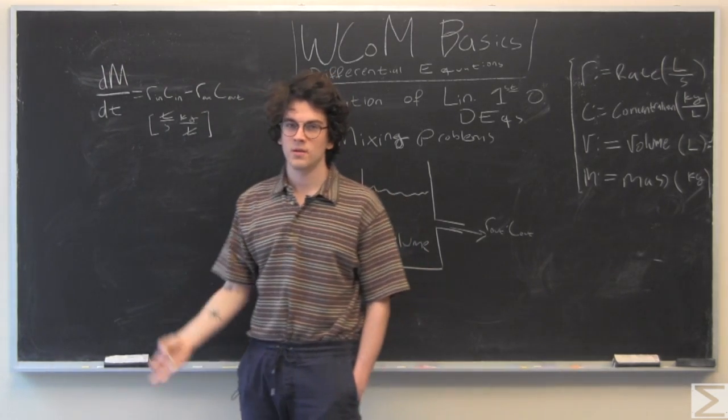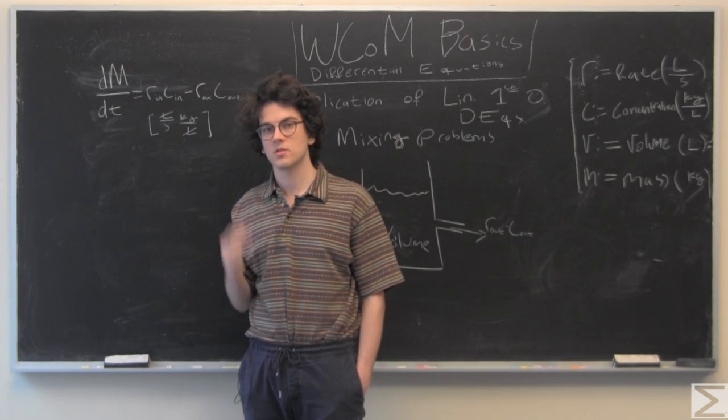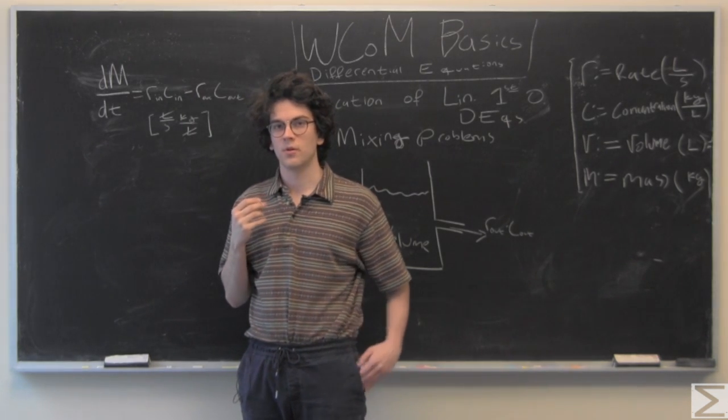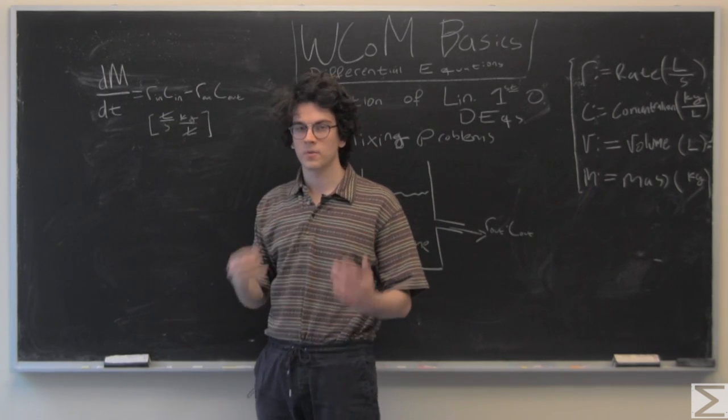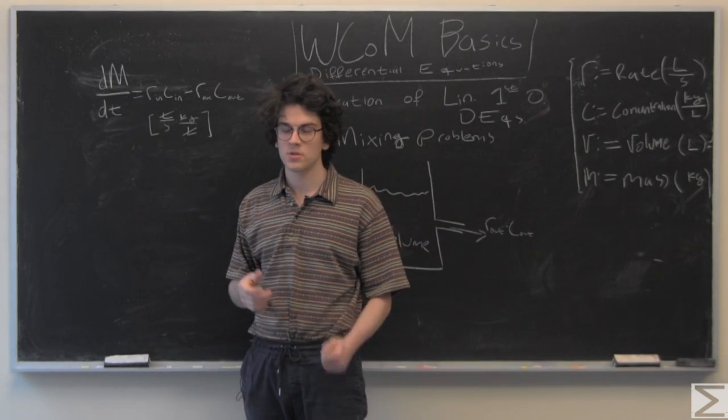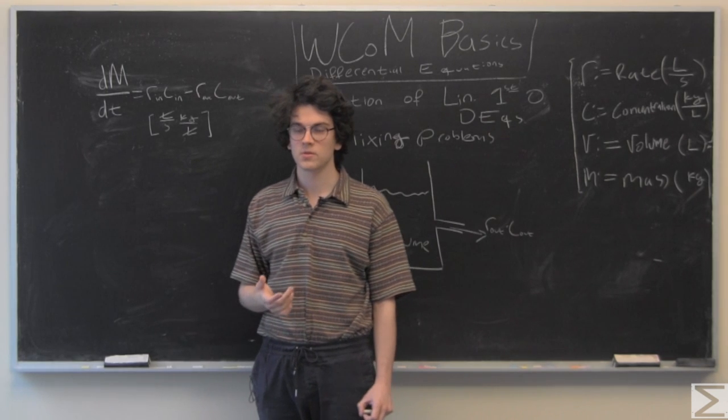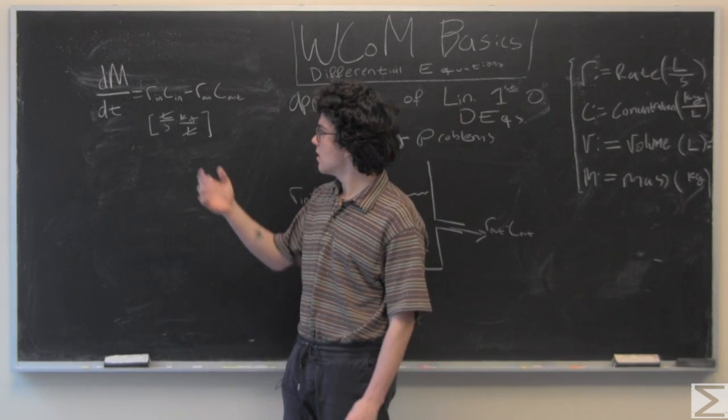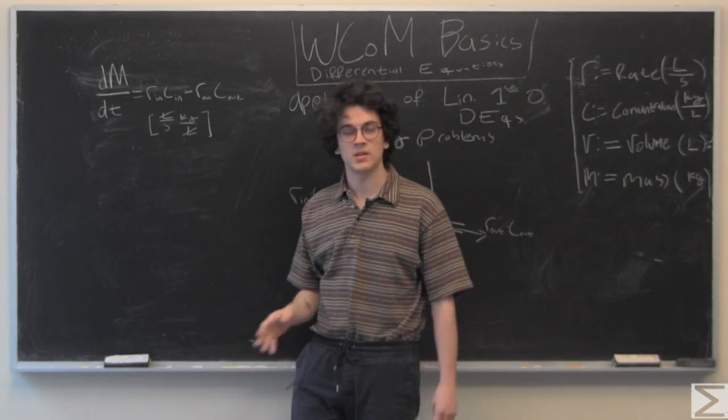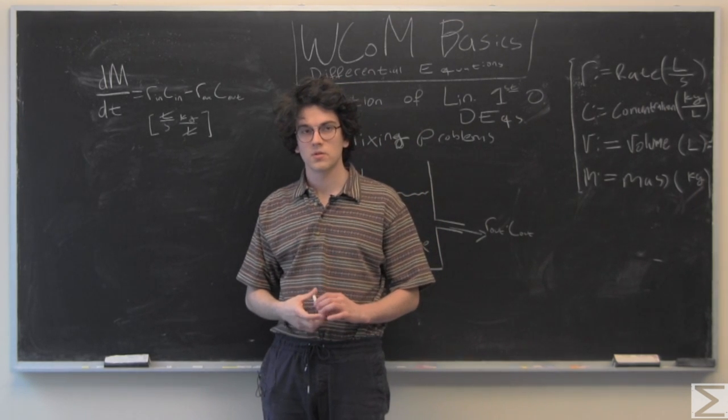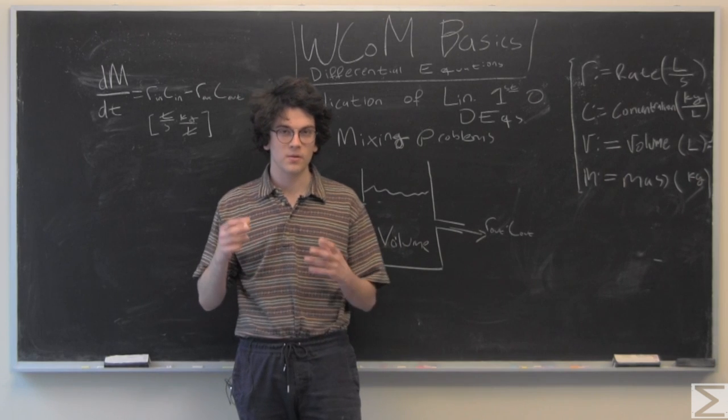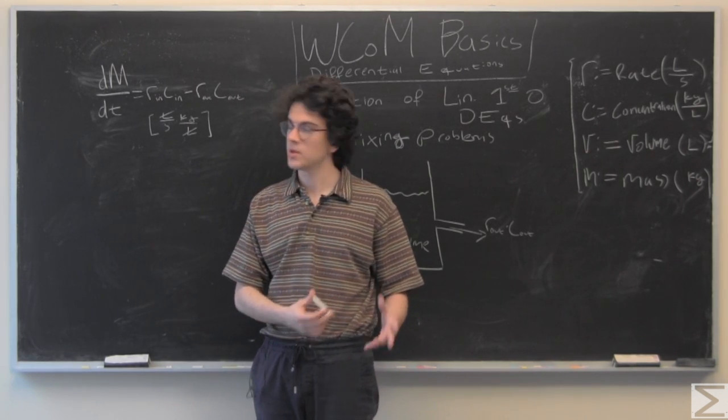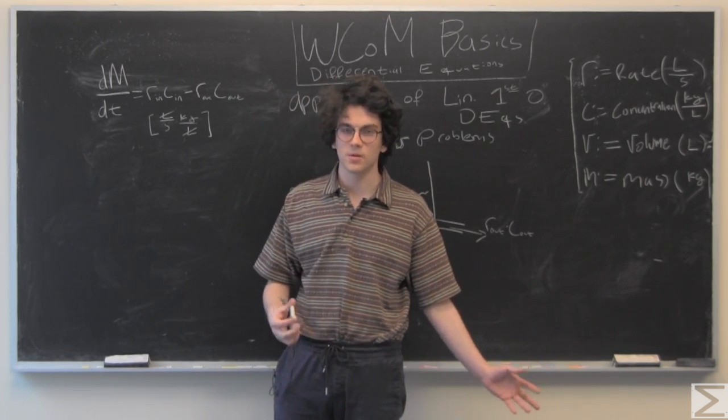So we have the rate of change of the mass is equal to the RNCN. And rate times concentration, if you just look at the units and do some dimensional analysis, we have is in kilograms per second. So we have the rate of change coming in, the rate due to it coming in minus the rate due to it coming out.